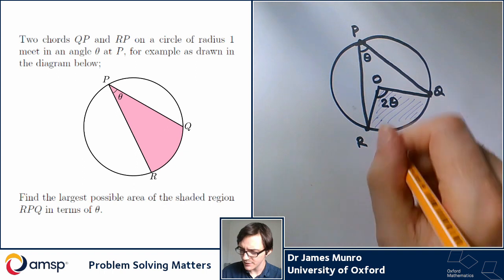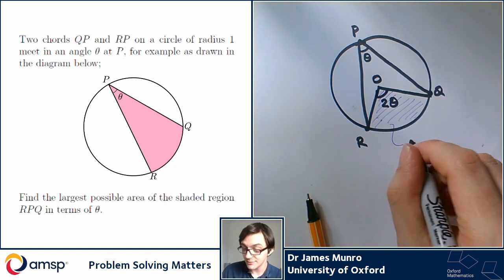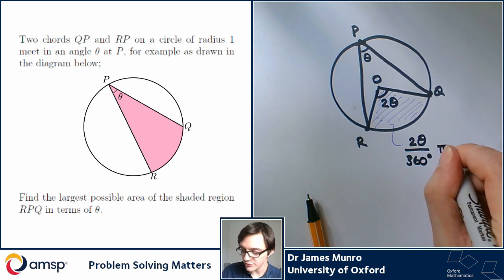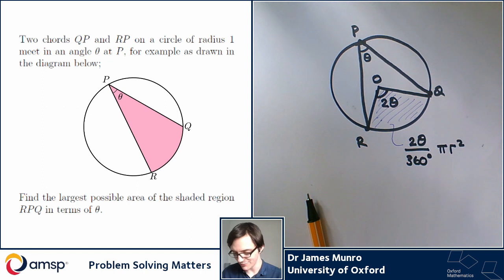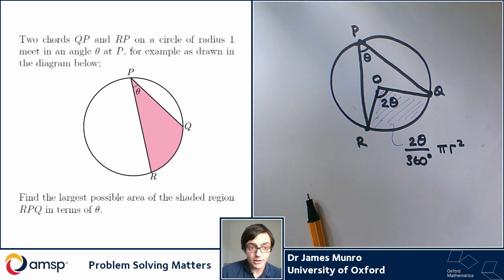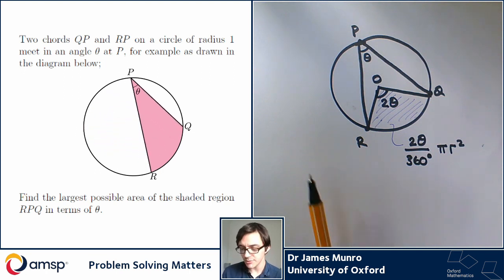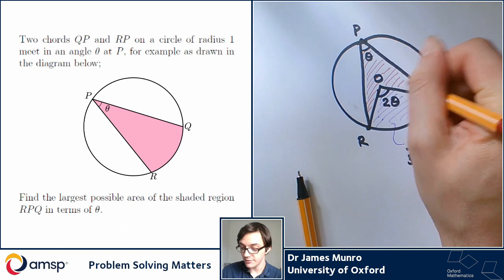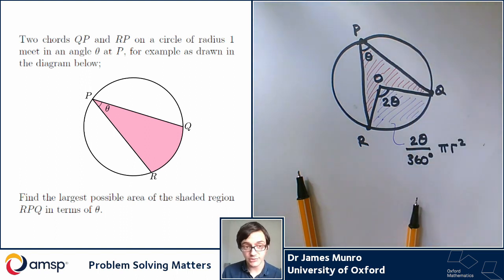I could work that area out. This area is 2 theta over 360 degrees — that much of a circle — times pi r squared. I think the radius of the circle is 1, but pi r squared for now. So that's how big the purple area is, and that's fixed — just something to do with theta. The only thing I can change is move P around somewhere else on the circle, still subtending the same chord QR, still having an angle of theta. All I want to do is maximize this leftover shape — this kind of Star Trek logo shape.